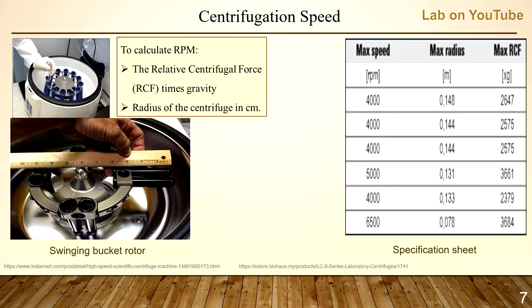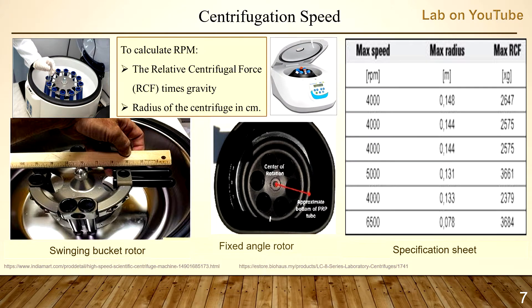To measure the radius yourself: if you are using a swinging tube or bucket, lift it up to a horizontal position and measure the distance from the center of the rotor to the bottom end of the bucket or tube. If your centrifuge has a fixed-angle rotor, measure from the center of the rotor to the approximate bottom of the tube. Remember: measurement unit is centimeters.